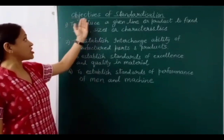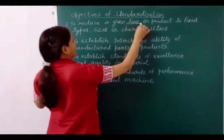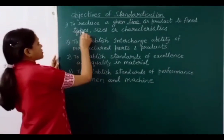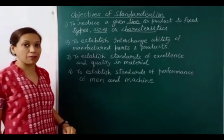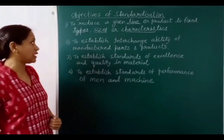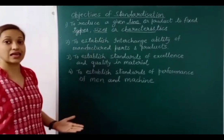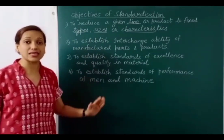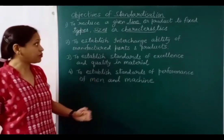Now let's understand the objectives of standardization. The first objective is to reduce a given product line to fixed types, sizes, or characteristics. For example, a garment company may manufacture formal or informal clothing in standard sizes: small, large, XL, double XL. Two companies may offer the same sizes, but customers may get different fits from different companies.